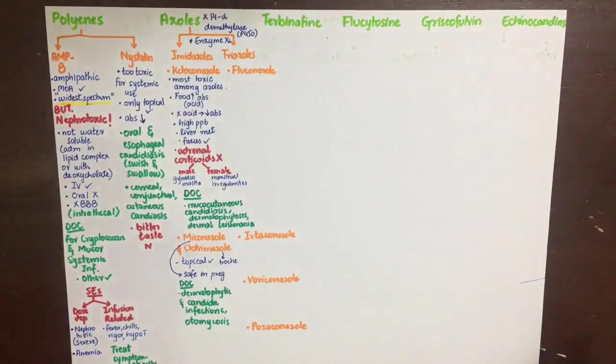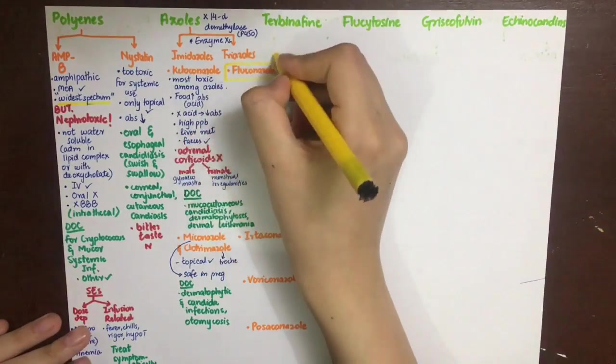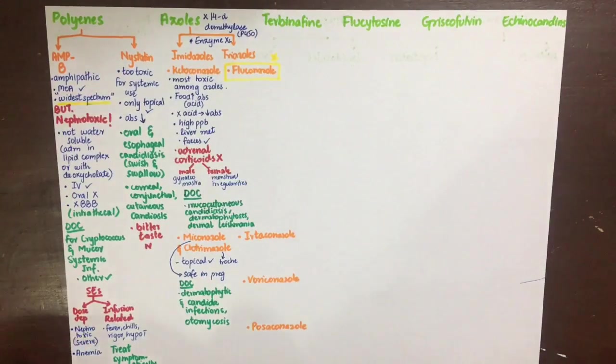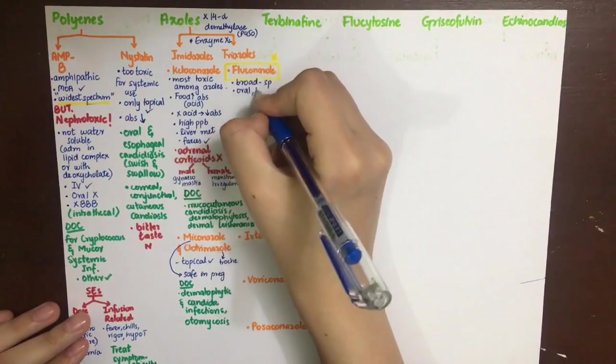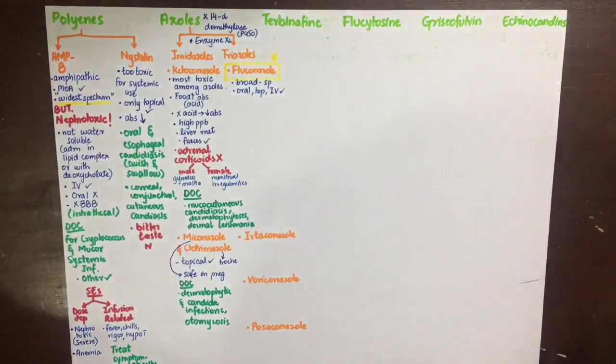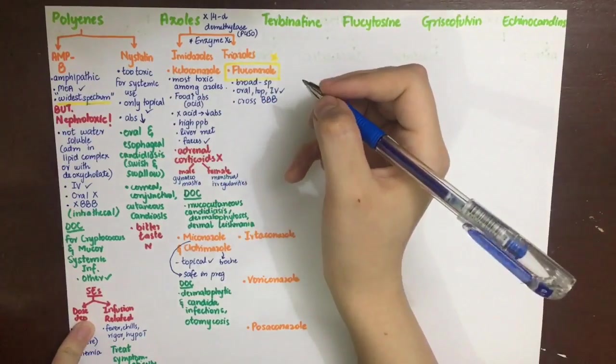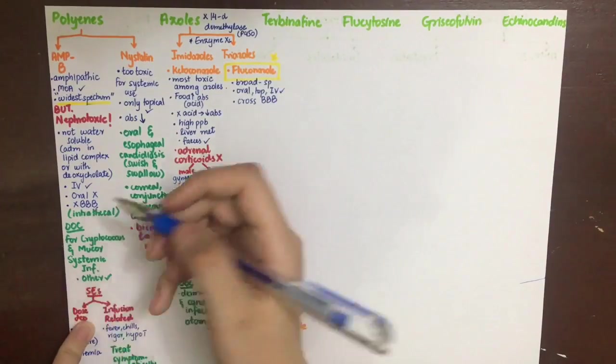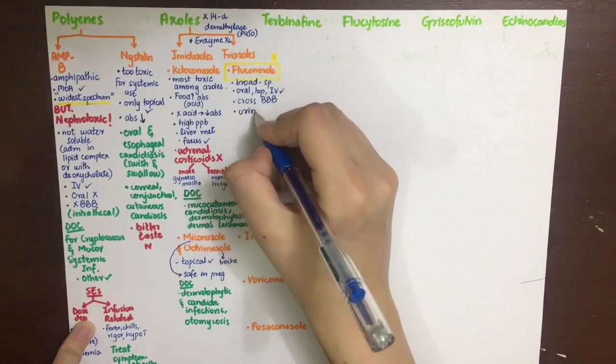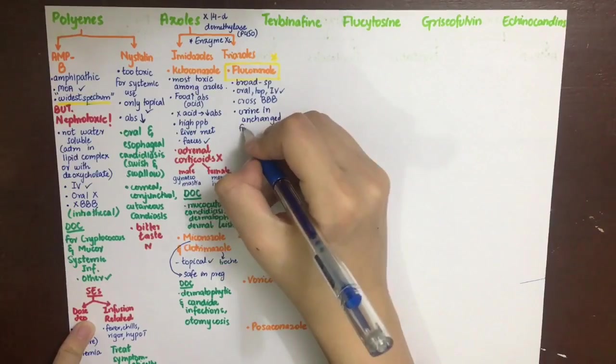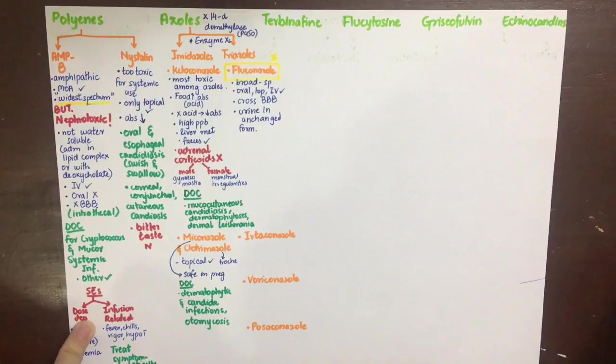Firstly, it is a broad-spectrum antifungal agent. Secondly, its oral and IV absorption is very good, and it can also be given topically. It crosses the blood-brain barrier in contrast to amphotericin B. Even on oral and IV administration it will cross the blood-brain barrier and can be used in cryptococcal meningitis.